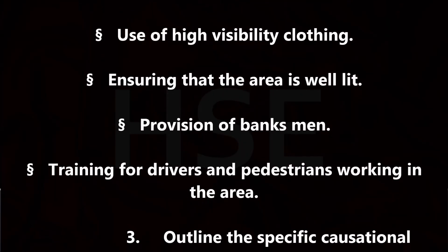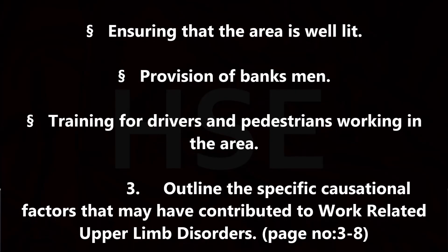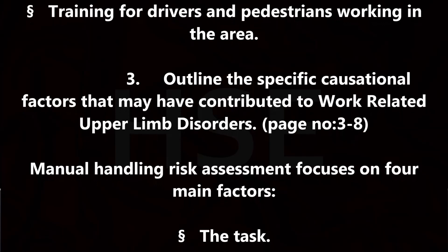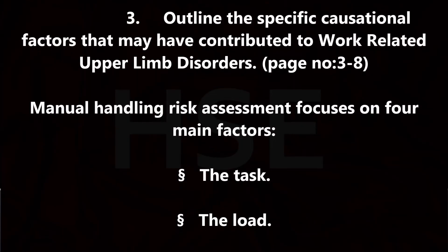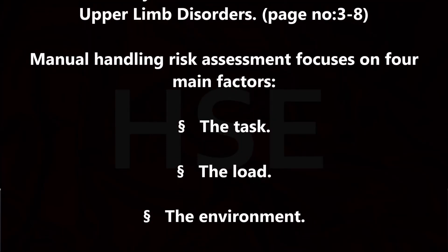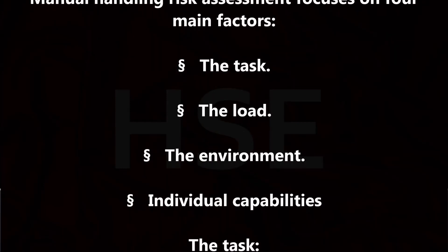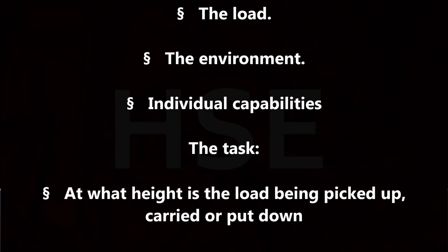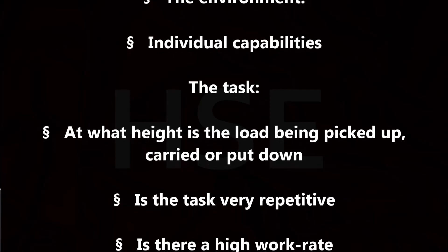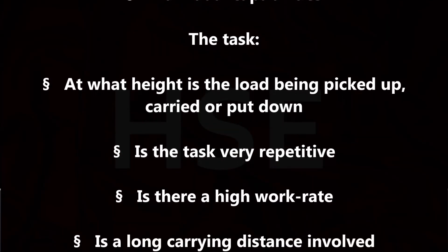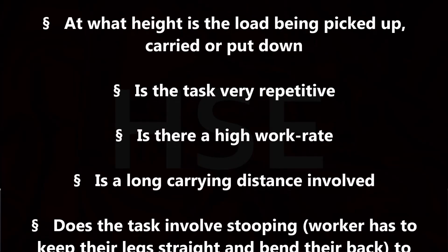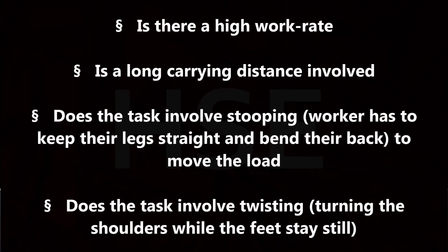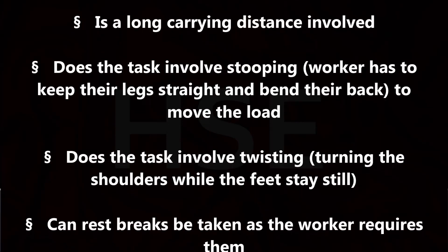Outline the specific causational factors that may have contributed to work-related upper limb disorders. Manual handling risk assessment focuses on four main factors: the task, the load, the environment, and individual capabilities. For the task: at what height is the load being picked up, carried or put down? Is the task very repetitive? Is there a high work rate? Is a long carrying distance involved? Does the task involve stooping — the worker has to keep their legs straight and bend their back to move the load? Does the task involve twisting, turning the shoulders while the feet stay still? Can rest breaks be taken as the worker requires them? Does the task involve lifting through a vertical distance? Does the task involve reaching above shoulder height? Does the task involve the worker holding the load away from their torso?